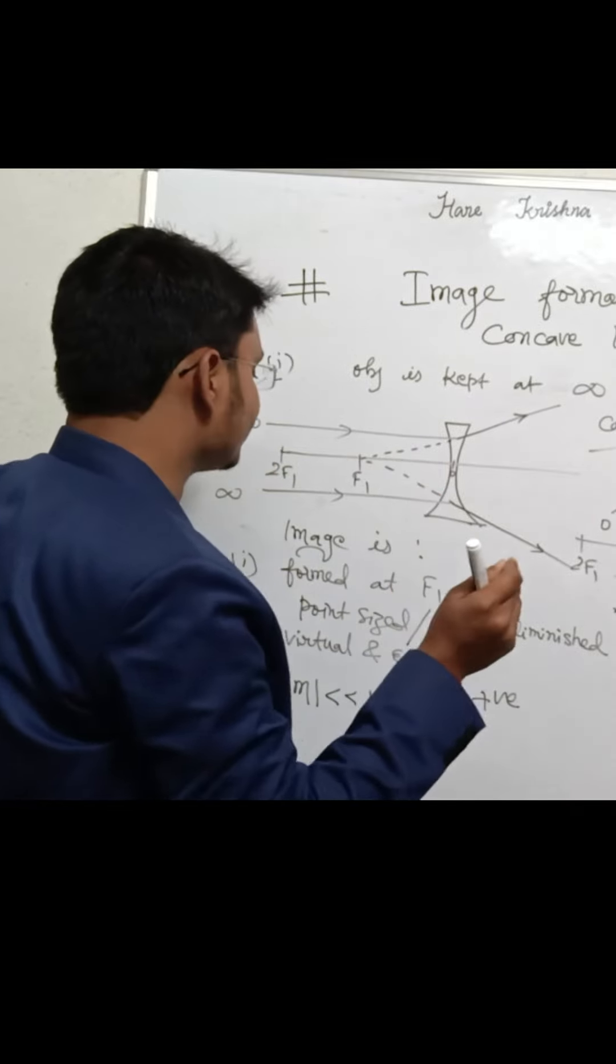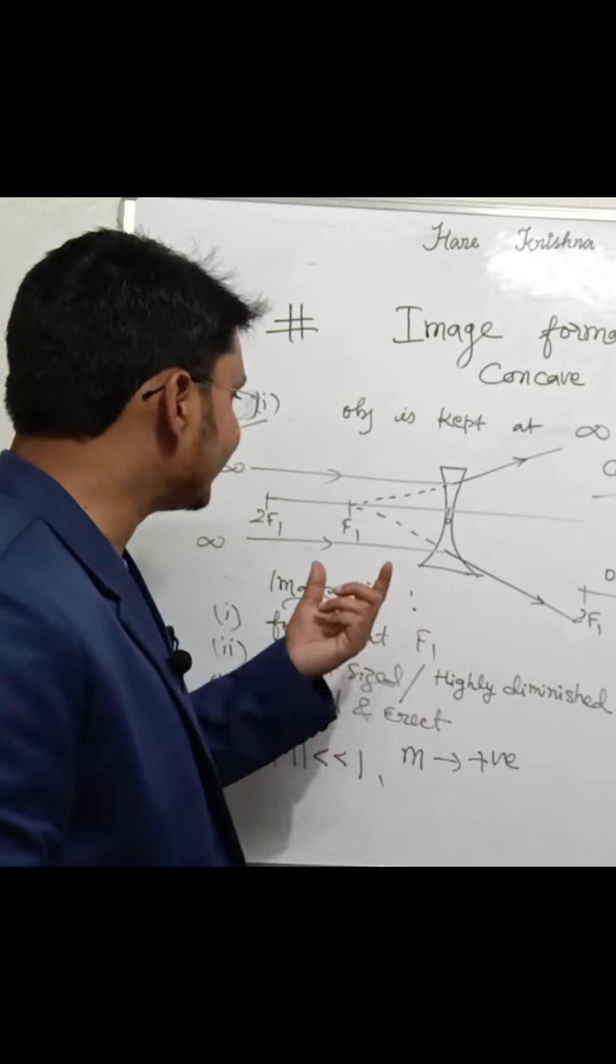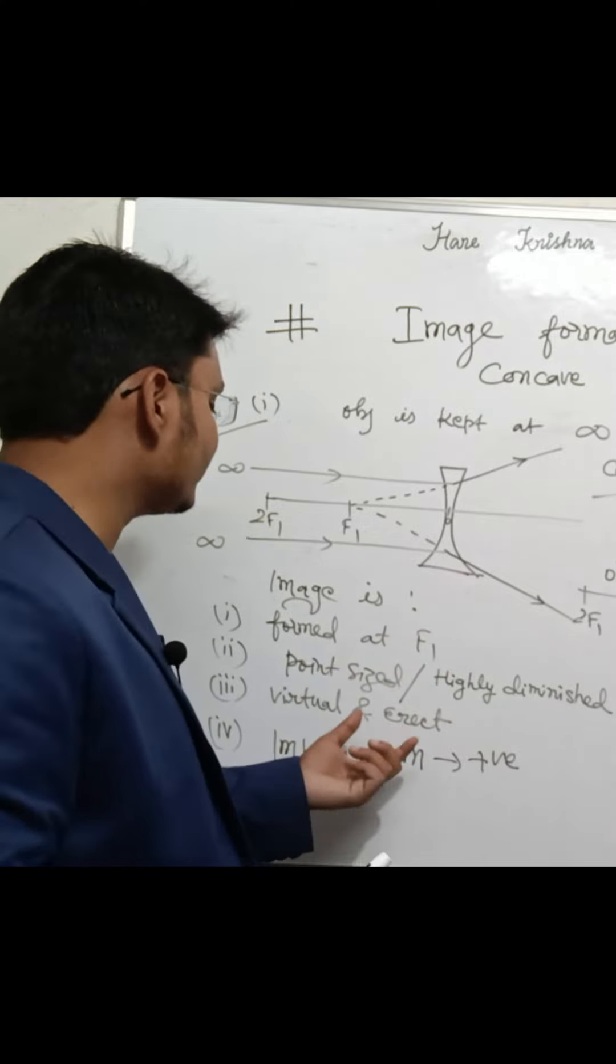The image forms on the same side as the object. It is point size, virtual, and erect. Because it is erect, the magnification is positive and very much less than one.